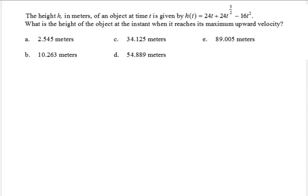The height h in meters of an object at time t is given by the function 24t plus 24t to the 3/2 seconds, minus 16t squared. What is the height of the object at the instant when it reaches its maximum upward velocity? Notice that we're dealing with the position function and we need to find the maximum upward velocity.